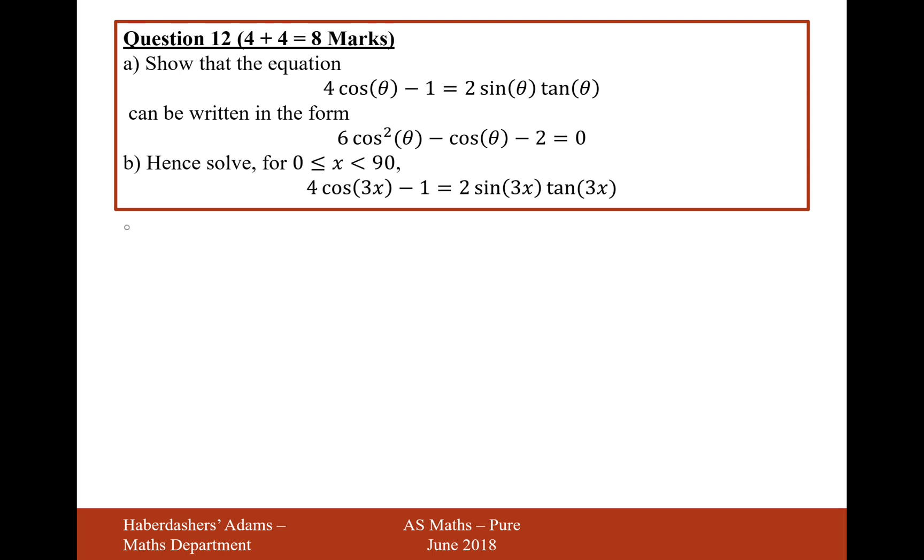I think what we'll do then is start off by writing down the expression we need to start with: 4 cos θ minus 1 equals 2 sin θ tan θ. I'm going to rewrite tan θ as sin θ over cos θ.